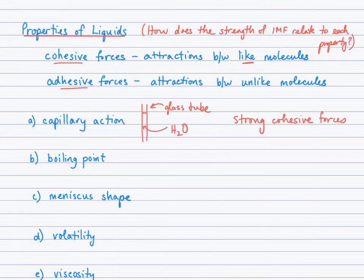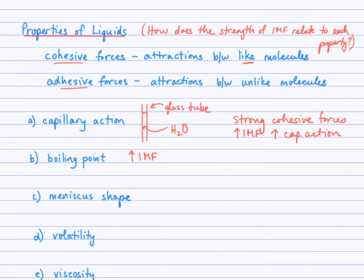Keep this question in mind: how does the strength of the intermolecular force relate to each property? With stronger cohesive forces — for example, hydrogen bonding — we'll see greater capillary action. This occurs in narrow tubules. For boiling point, this is a familiar relationship: as we have stronger intermolecular forces, we see an increase in boiling point. The key is to understand each property and whether stronger or weaker forces lead to it being higher or lower.